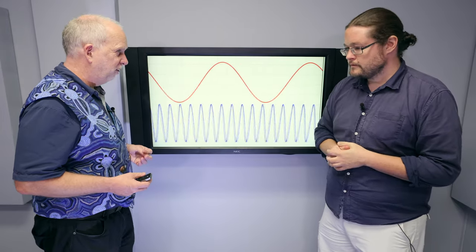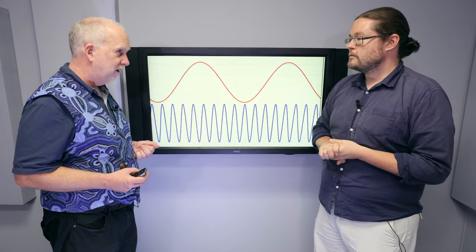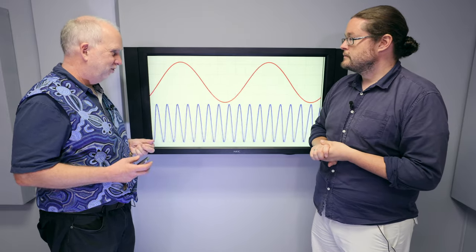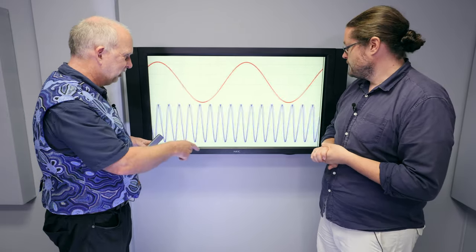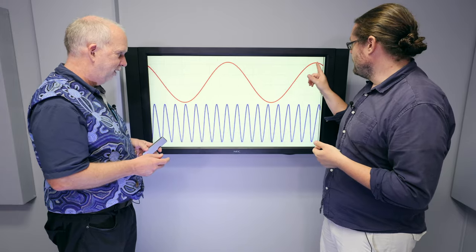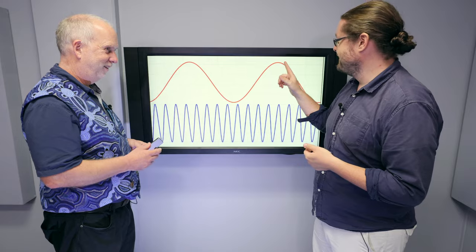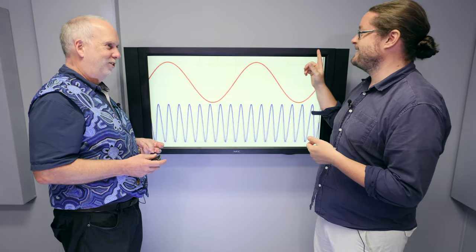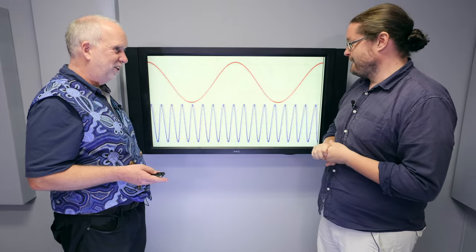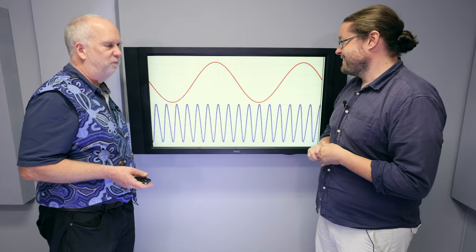So one way to measure it is the wavelength of the wave. The other way which is more common is the frequency, which is telling you how many waves go past a second. So if you count for a second how many red waves go past, it's one, two, three. So it's about one wave every two or three seconds. That means it's a frequency of about half.